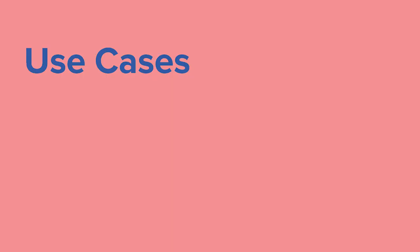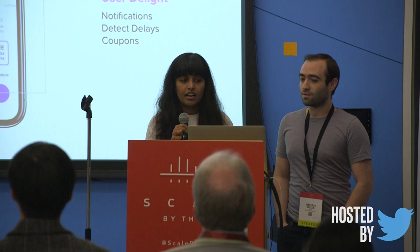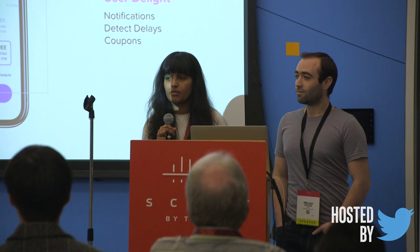Lyft is a ride sharing company. Our goal is to match passengers with drivers, and we want our drivers and passengers to be really happy with our platform. That means short ETAs. We want to make sure our drivers are being paid fairly while also making sure that our passengers are not being overcharged for their rides. We also want to make sure that our users have a good experience on the platform, which might mean timely notifications.